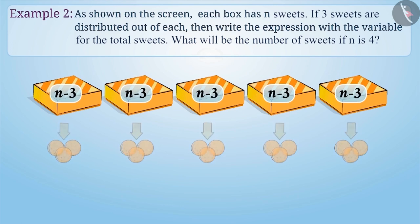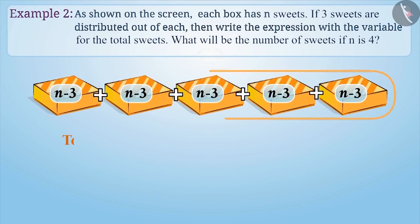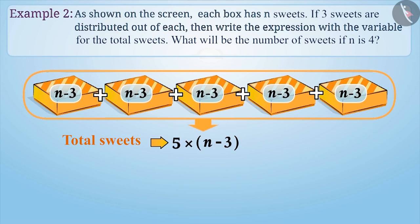So, the total number of sweets in 5 boxes will be 5 into n minus 3. If we multiply 5 with each number in the bracket, we will get 5 into n minus 5 into 3, which is equal to 5n minus 15. It is the algebraic expression for the total number of sweets in the boxes.